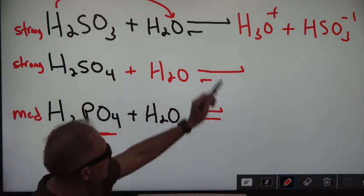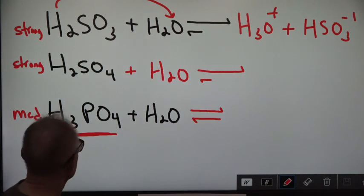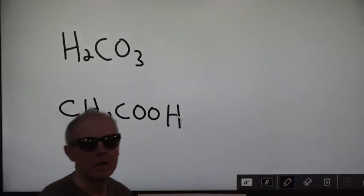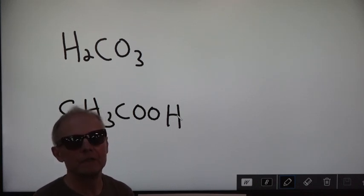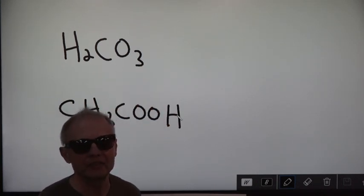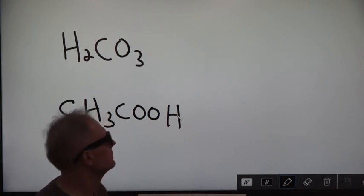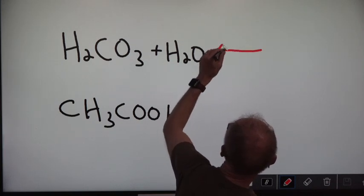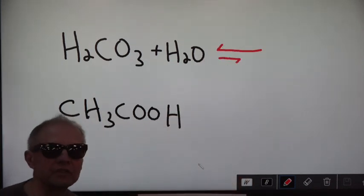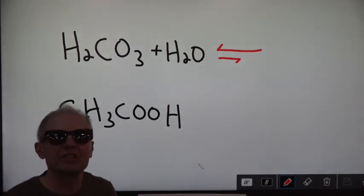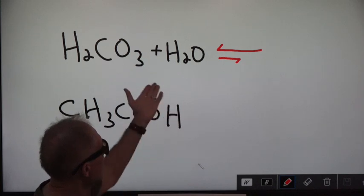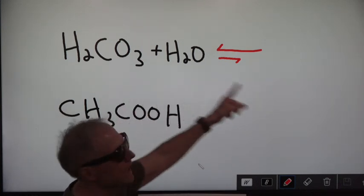Now I want you to find the products and do your acid-base pairs. In every single carbonated beverage you have carbonic acid. Look at the arrows for carbonic acid — does it ionize a lot? It doesn't break apart a lot. Carbonic acid is a weak acid. Now you find the products and your alternate acid-base pairs.